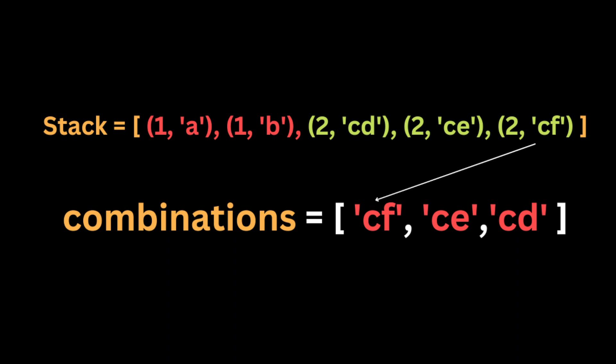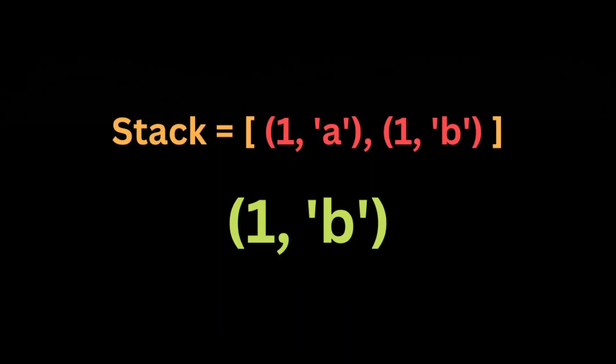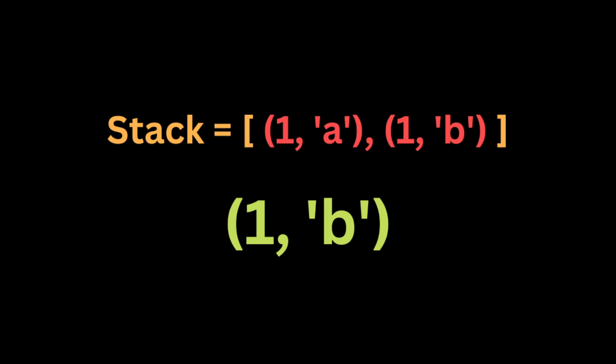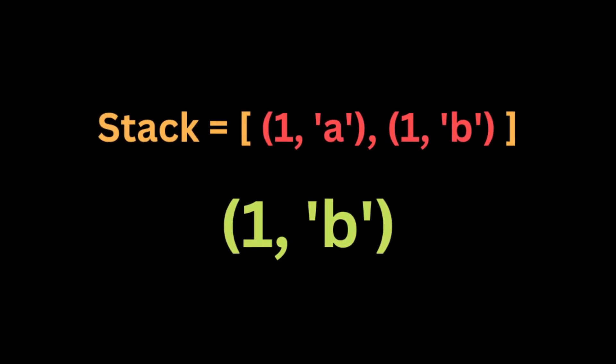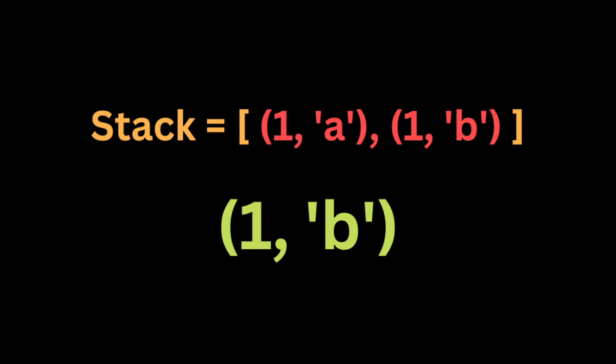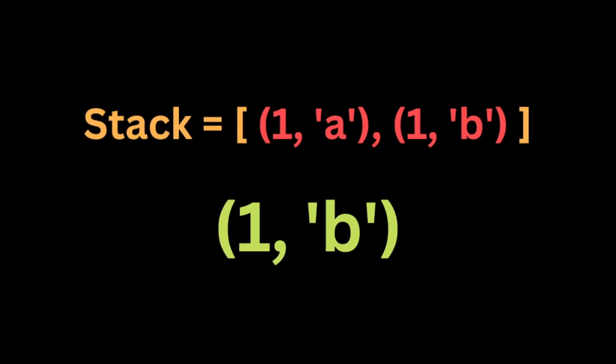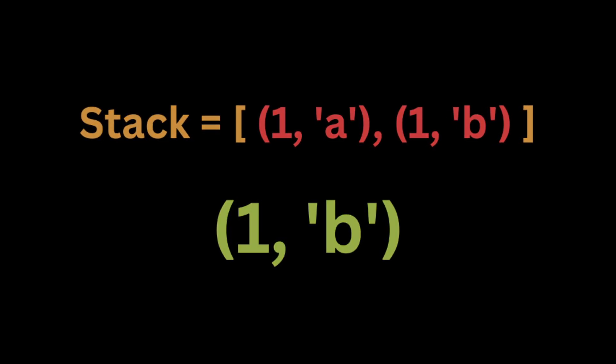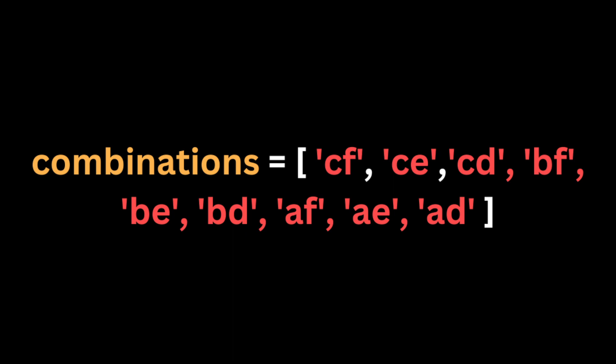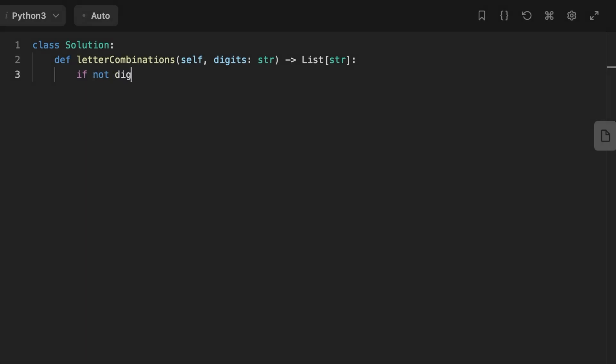After we reach the end of the iteration, we will have a stack with three combinations of the letter 'c' and the letters of the second digit. We then pop each tuple from the stack and check if the index is equal to the length of the digits — if so, we push the current string to the combination array. Once we push all combinations with an index equal to the length of the digits, we pop the last tuple with index one and letter 'b' and repeat the same process until we have all combinations in the array and an empty stack. Finally we return the output array.